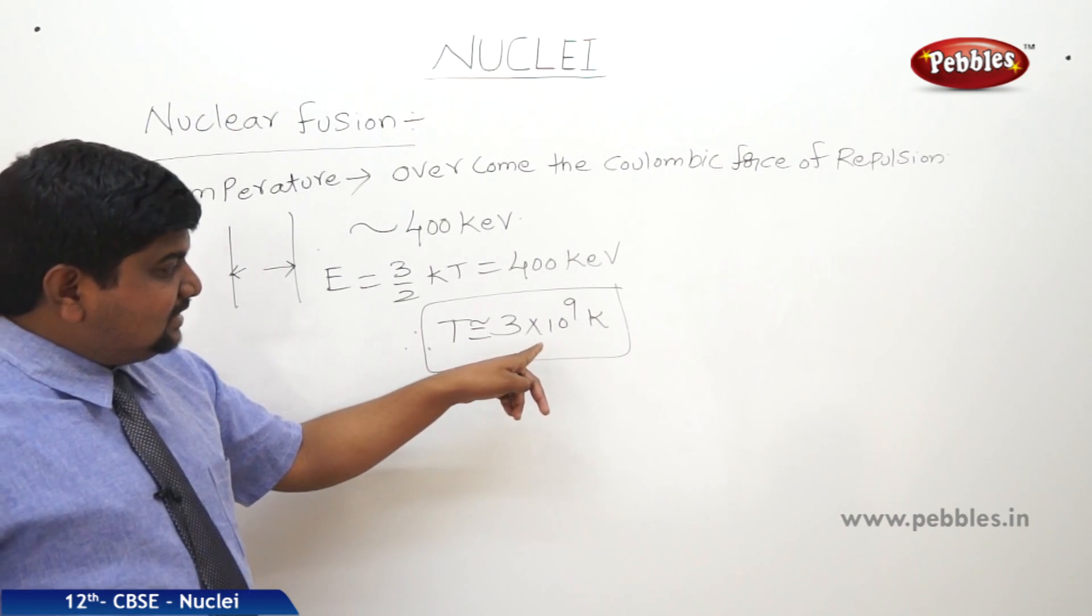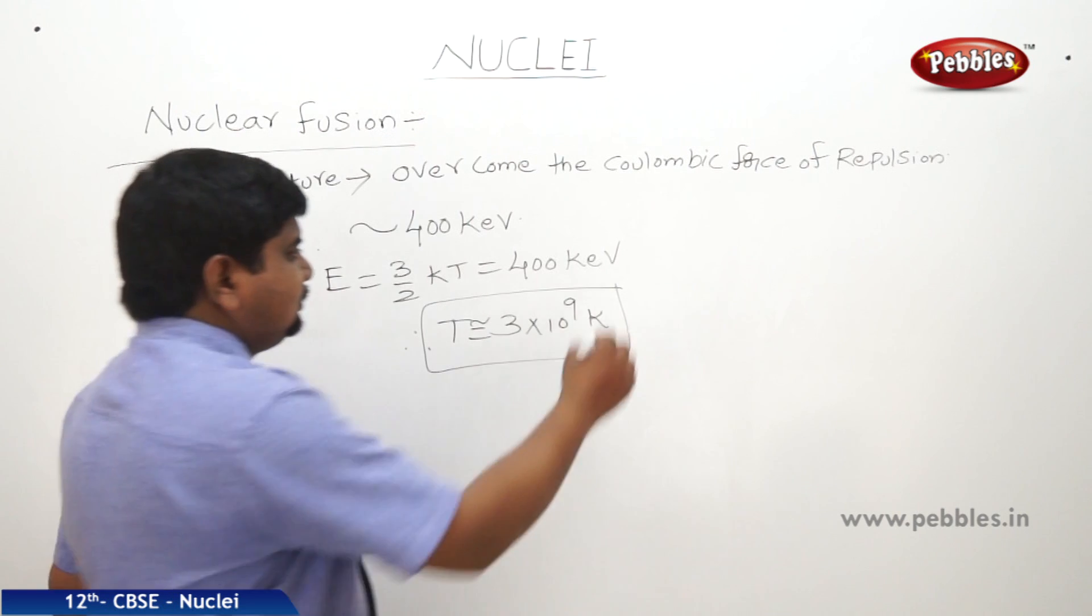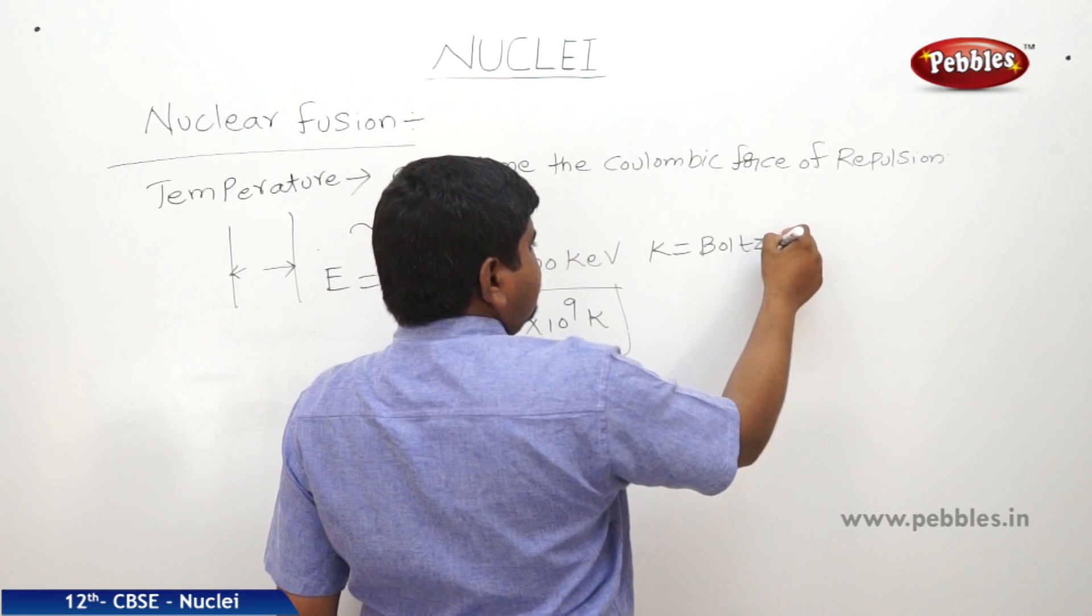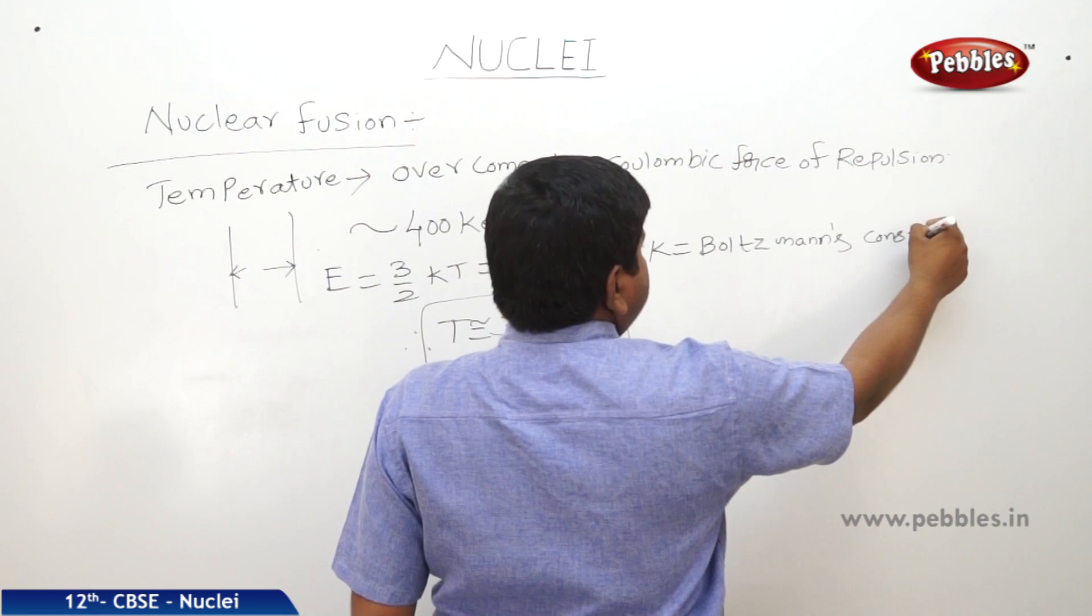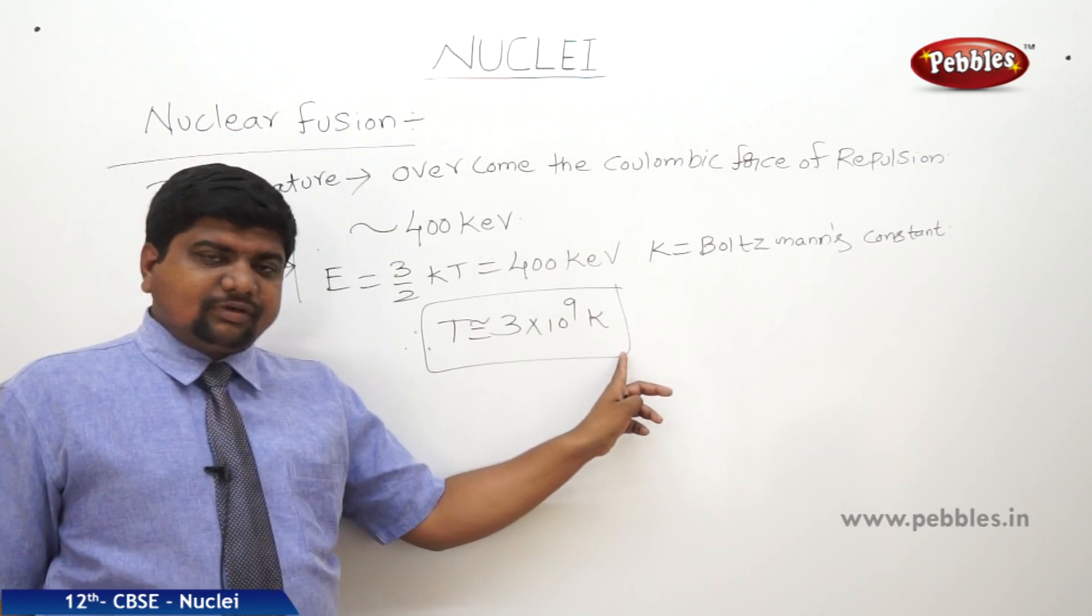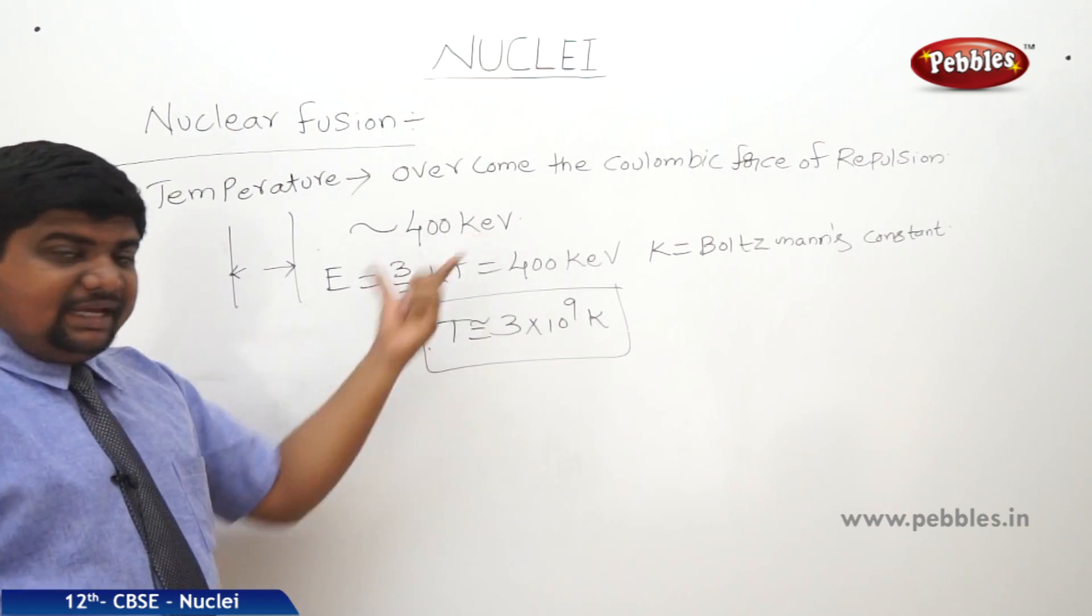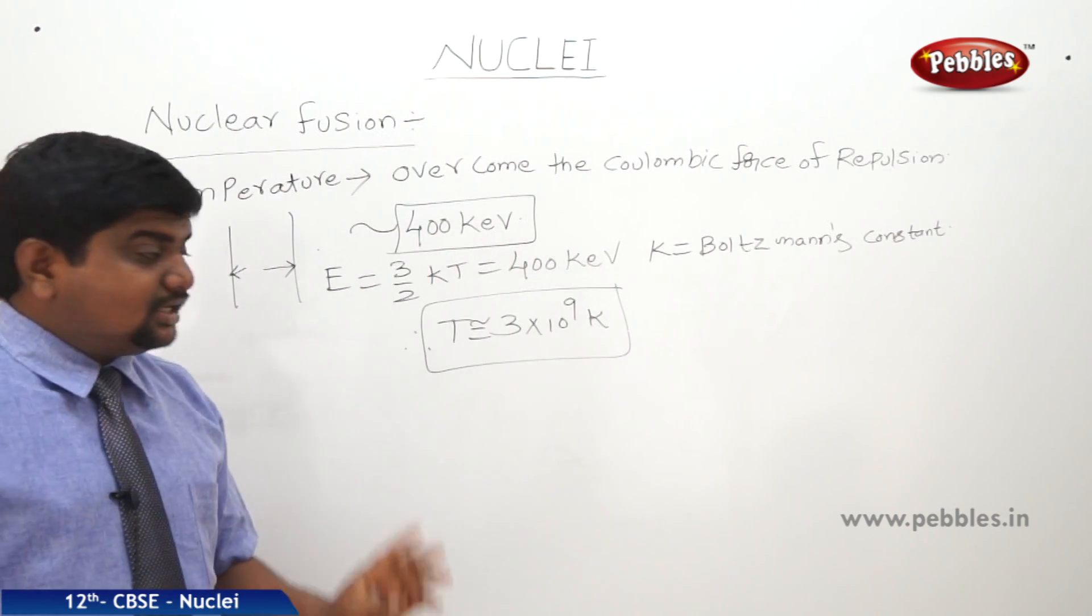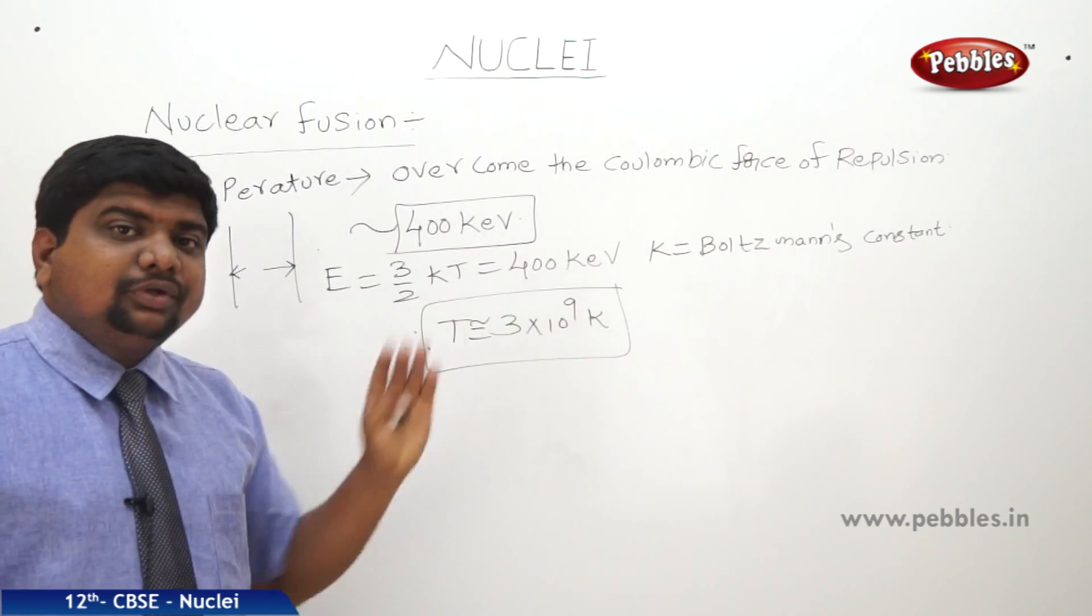Whenever the temperature is at this range, where K is equal to Boltzmann's constant, T is equal to 3 x 10^9 Kelvin. So this much temperature can be able to overcome the barrier of 400 KeV between the two same charged particles or two like charged particles, maybe proton to proton or electron to electron.